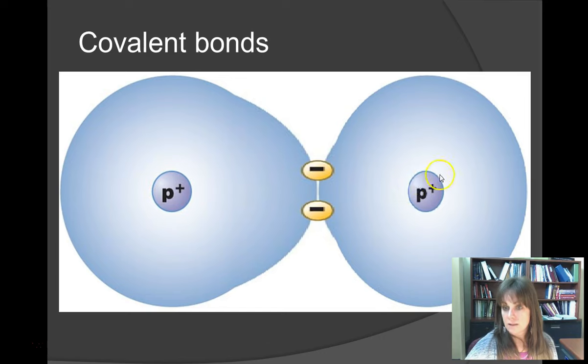But let's look here. On this side, we've got a positive, but it's holding two negatives a little bit closer to it. Is it sharing? Yes. So it's not like it's stolen that electron and has a full extra negative charge, but it holds them a little bit more tightly.